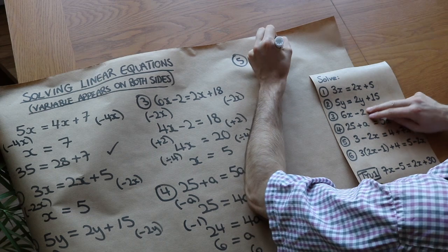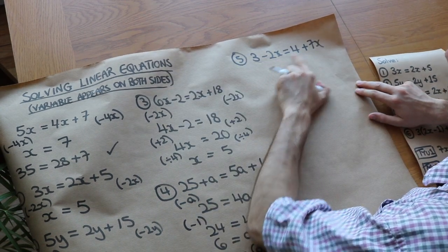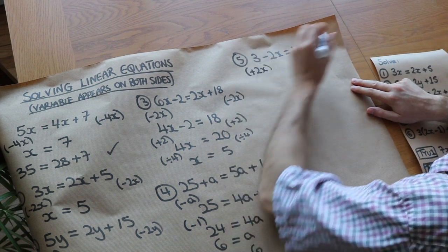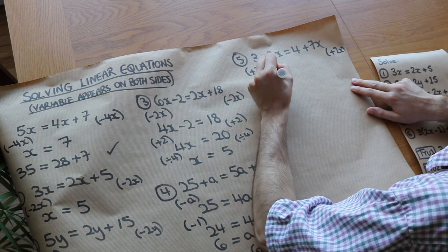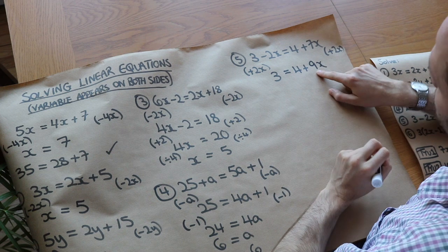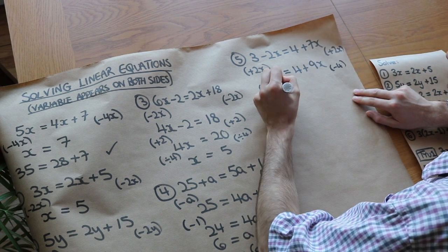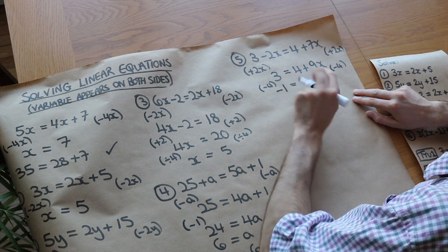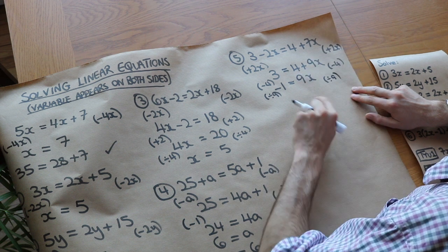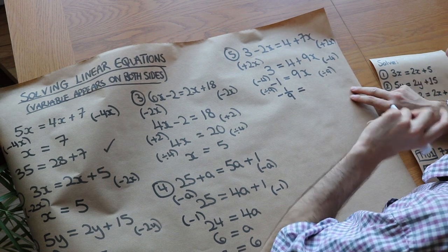We've got 3 minus 2x is equal to 4 plus 7x. Are there more x's on the left or right? 7x is clearly bigger than minus 2x, so we collect on the right by adding 2x to both sides. That leaves just 3 on the left, and 7x plus 2x is 9x plus 4 on the right. Subtract 4 from both sides: 3 minus 4 is minus 1, leaving 9x. Divide both sides by 9, giving x equals minus 1 over 9. Don't convert that to a decimal approximation.